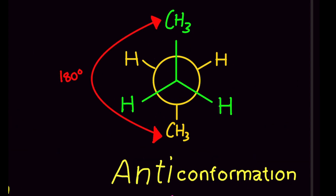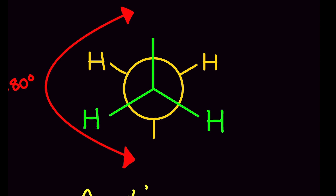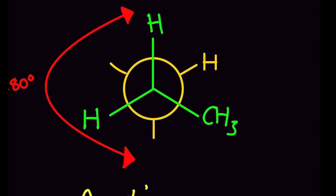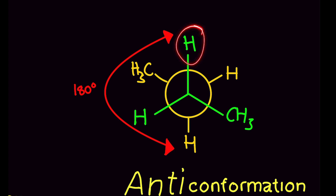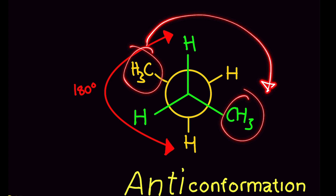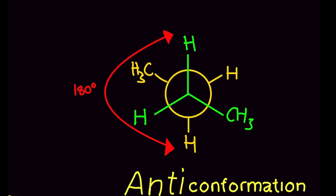A common question: what if the methyl group is here and the methyl group is here, with hydrogens elsewhere — is this still an anti conformation? The answer is yes. Just because they're not on the top and bottom does not mean it can't be anti. They are anti because these two groups are 180 degrees away from each other. As long as they're on opposite ends, this is anti.